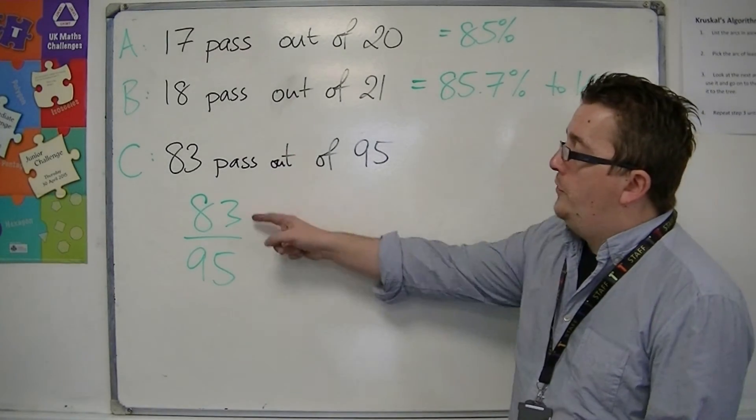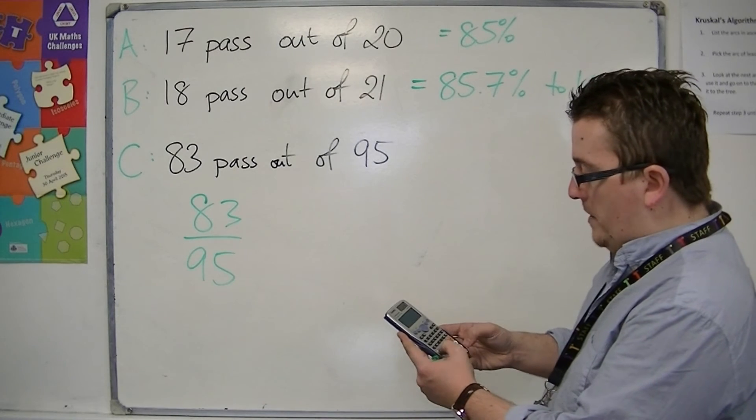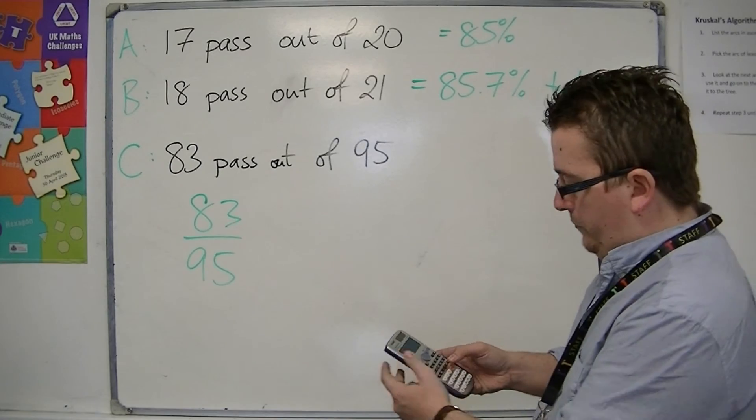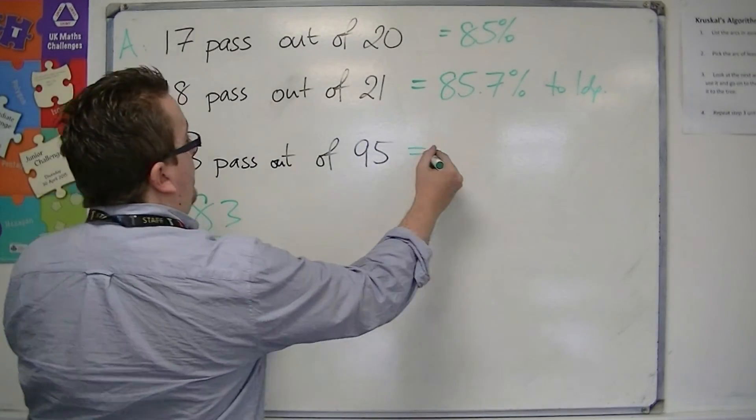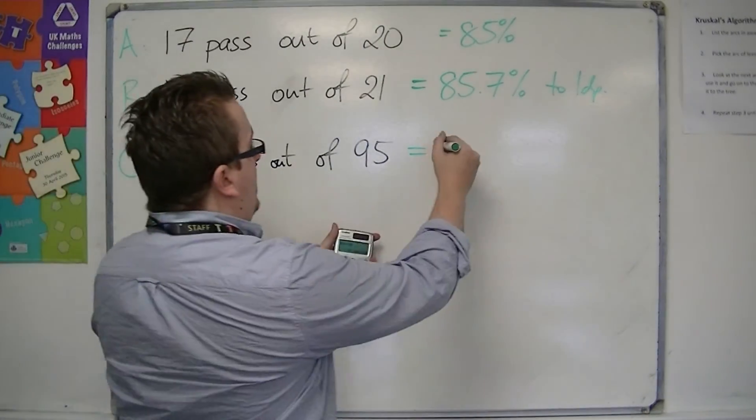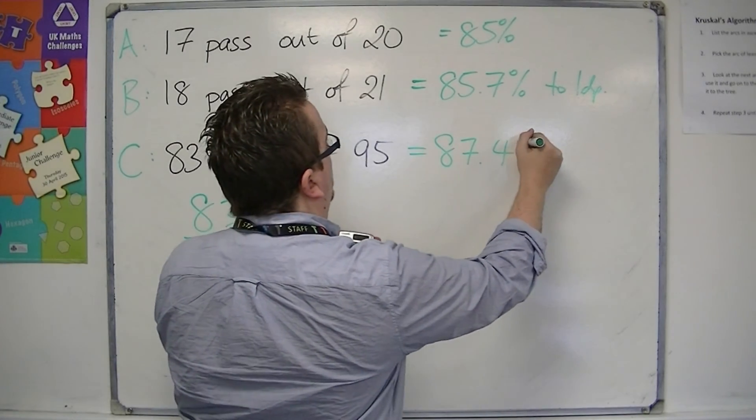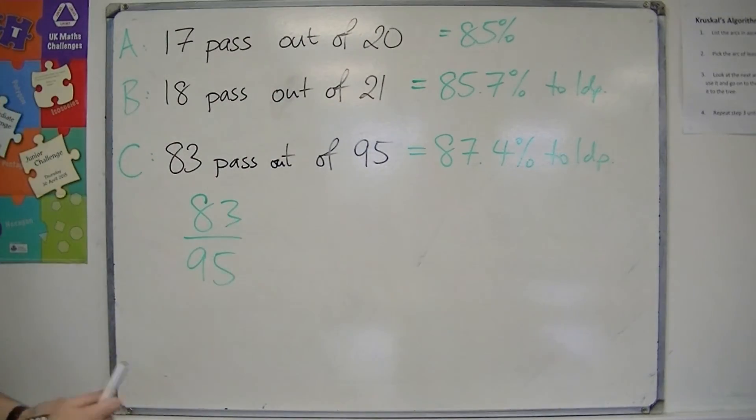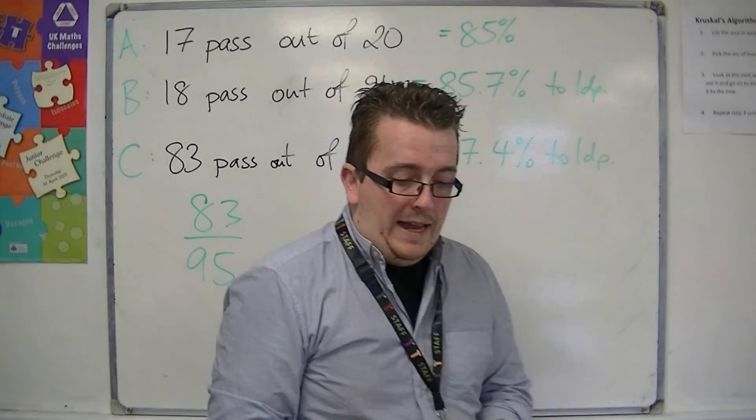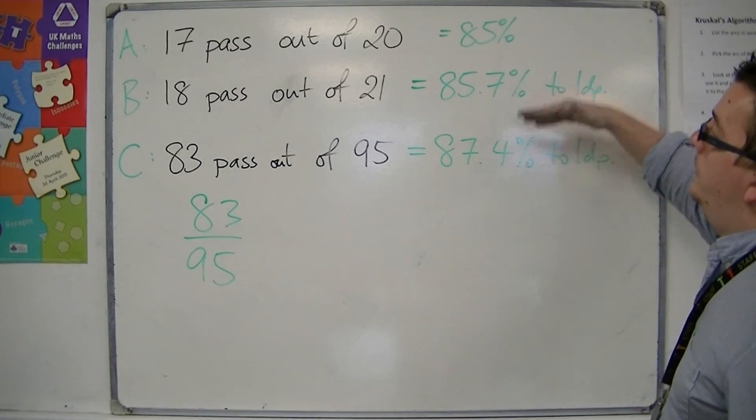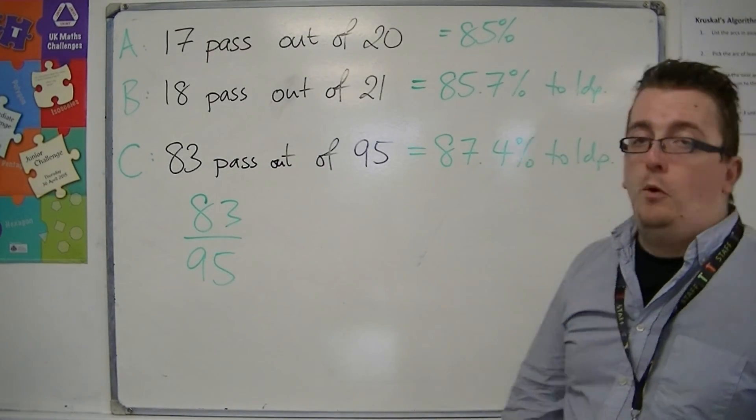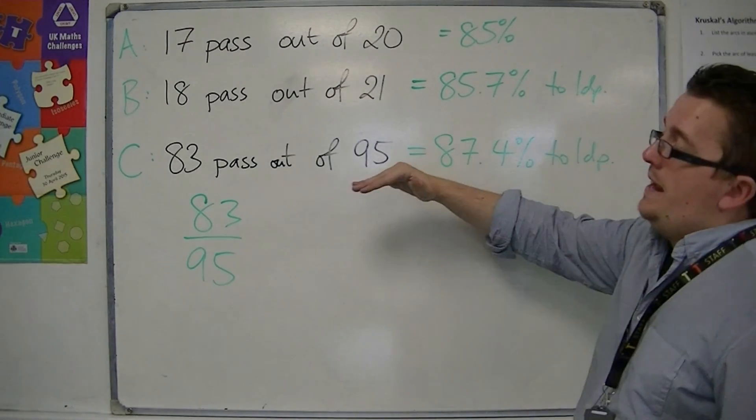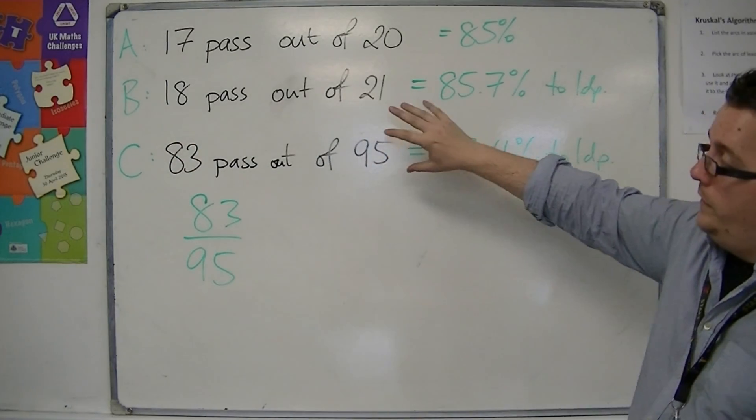So we do top divided by bottom on our calculator. 83 divided by 95. And then times that by 100. And what we find is that we get 87.4% to one decimal place. So in this case we can see that the larger class, online class, has done slightly better than either of the two smaller classes. So this is how you compare quantities like this.